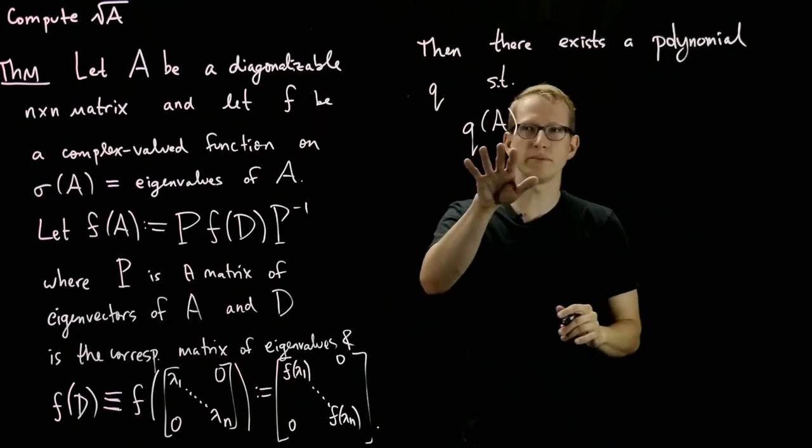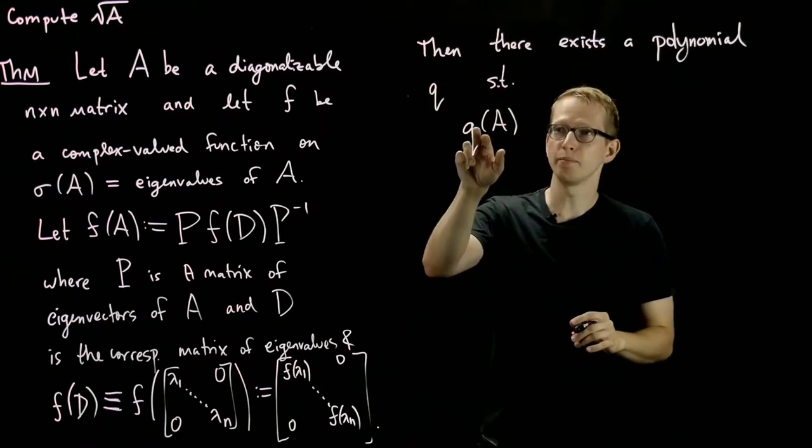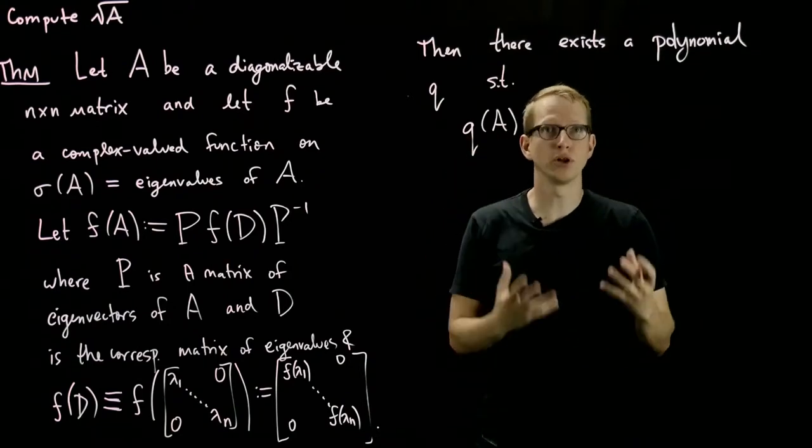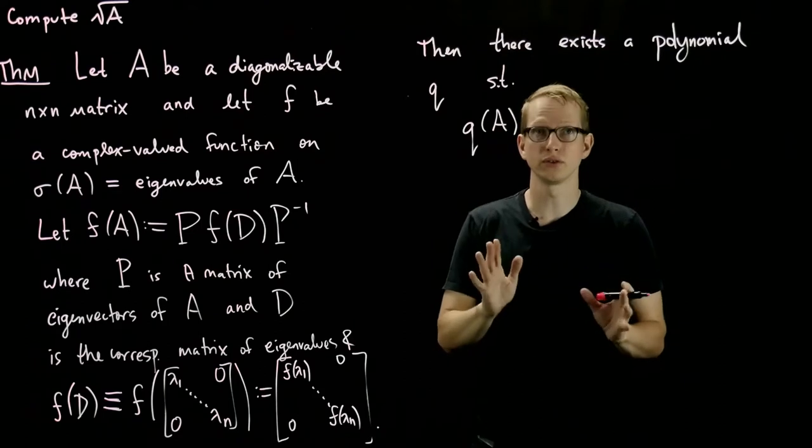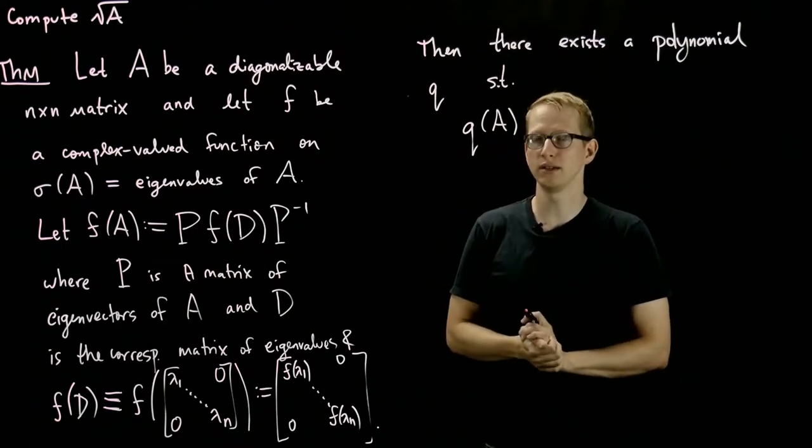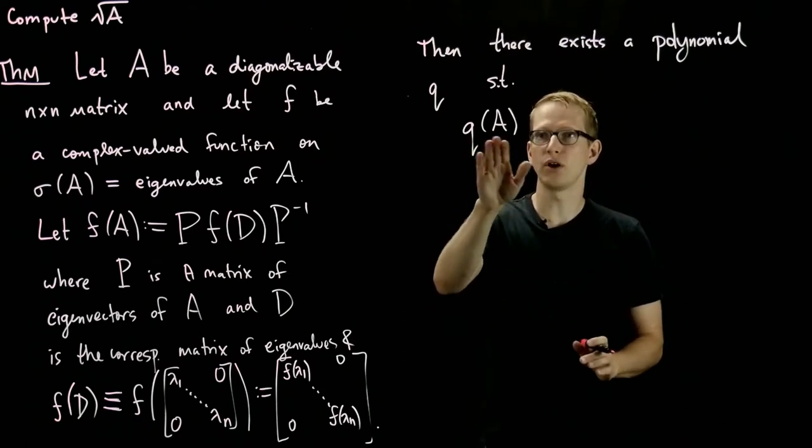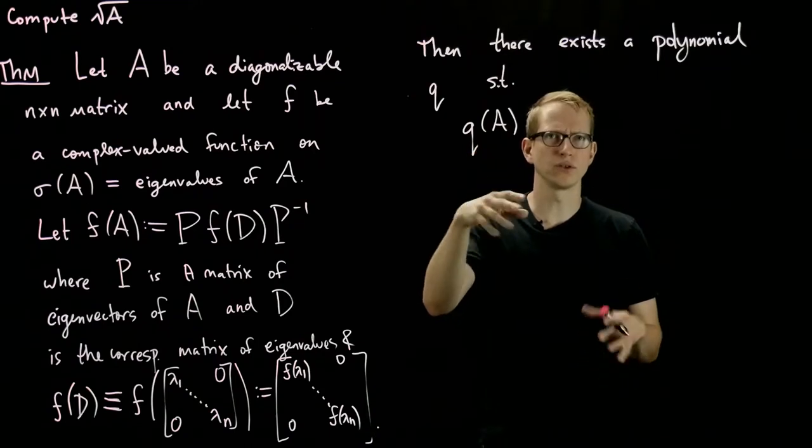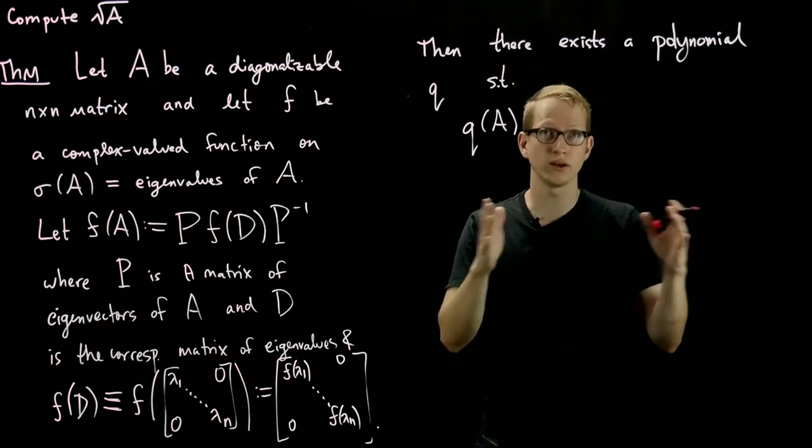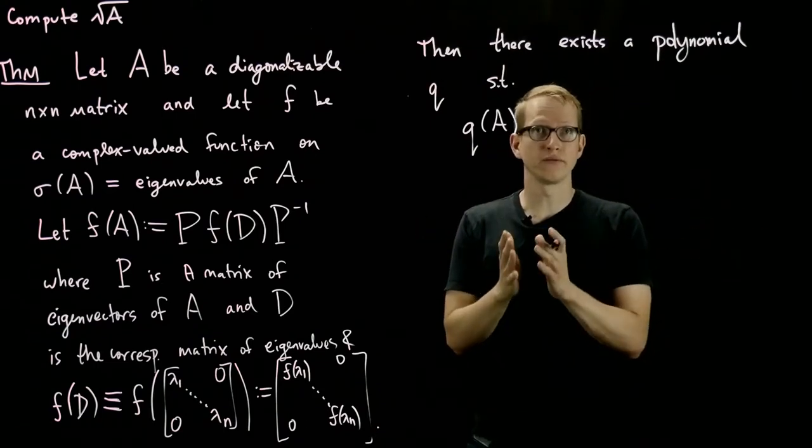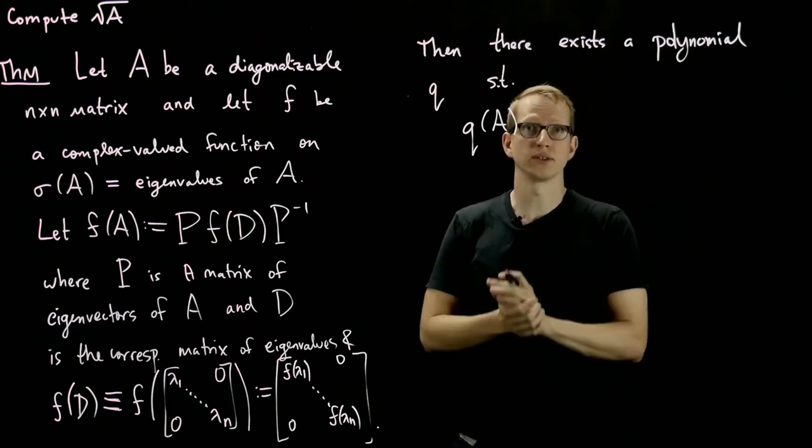Now, what do I mean by Q(A)? Basically, Q is a polynomial, and it makes sense to multiply matrices. We can take A, we can square it, we can cube it, we can also take it to the zeroth power, that's just the identity matrix. And then we can also multiply these by coefficients. So if I have any polynomial, it's very easy to define what Q(A) is. You just write your polynomial, and where you have your variable, you replace it with the matrix A.